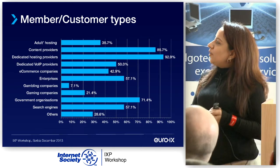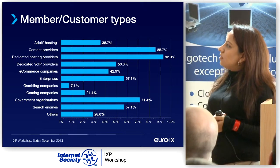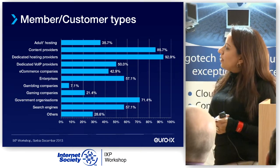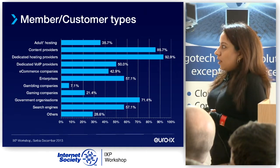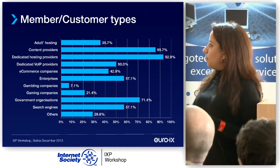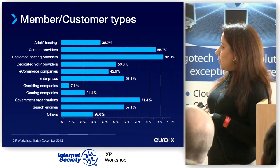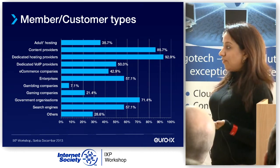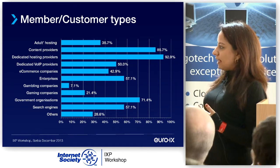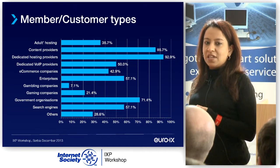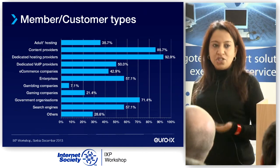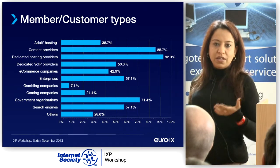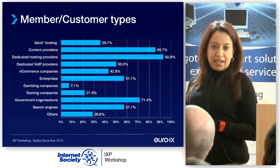We also look at what kinds of members are connected to internet exchanges. The largest number is dedicated hosting providers, but there are also content providers, VoIP providers, e-commerce providers, enterprise companies, and gambling companies all present at internet exchanges. What we're trying to show is that it's not just ISPs that connect to internet exchanges — it's a number of different types of networks.